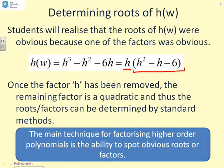What does this tell you? Well, the main technique for factorizing higher-order polynomials is the ability to spot obvious roots or factors. In this particular case, there was an obvious root, h = 0. If there's an obvious root, you can get on and factorize. If there isn't an obvious root, you may not be able to do higher-order polynomials.